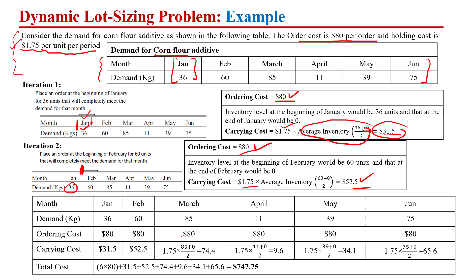Similarly, in March we place an order of 85 at the start of the month, giving an order cost of $80. The average inventory is (0 + 85) / 2 × $1.75 for the carrying cost. The same approach applies for April, May, and June — at the start of every month we place an order to meet demand. The carrying cost equals the average inventory in that period multiplied by the carrying cost per unit, and order cost plus carrying cost equals the total cost for that month.